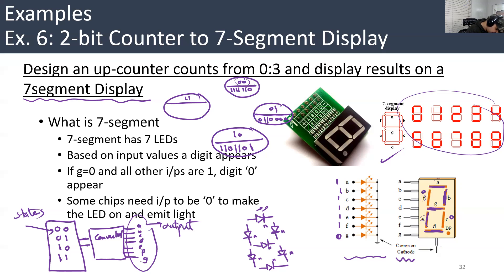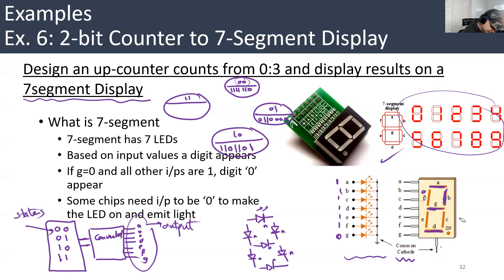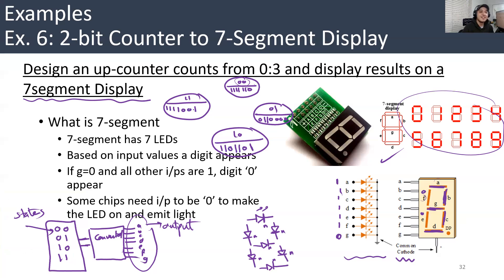For digit three: three is just like two, but now C will be one and E will be zero. So E and F are zeros. The outputs are A=1, B=1, C=1, D=1, E=0, F=0, G=1.